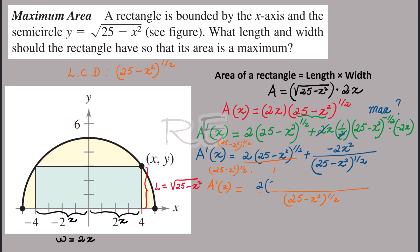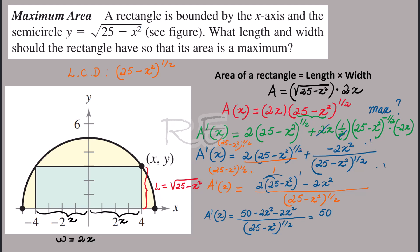Now 2 times (25 minus x squared) to the one-half times (25 minus x squared) to the one-half — we add the exponents — becomes 2 times (25 minus x squared) to the one, which gives 2(25 minus x squared). The second fraction already has the common denominator so it stays as negative 2x squared. Distributing gives 50 minus 2x squared minus 2x squared over the denominator. The numerator is 50 minus 4x squared.